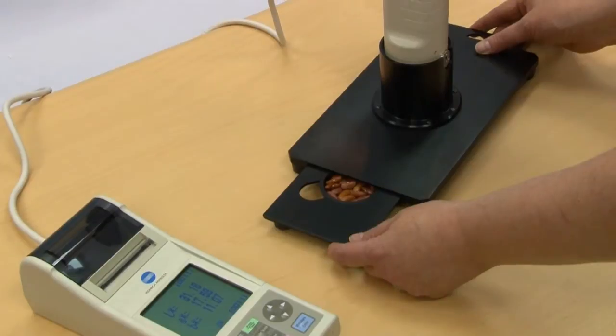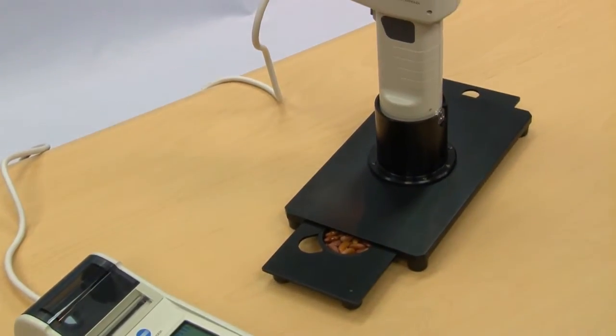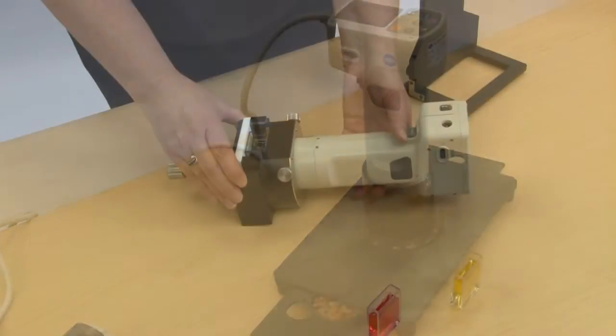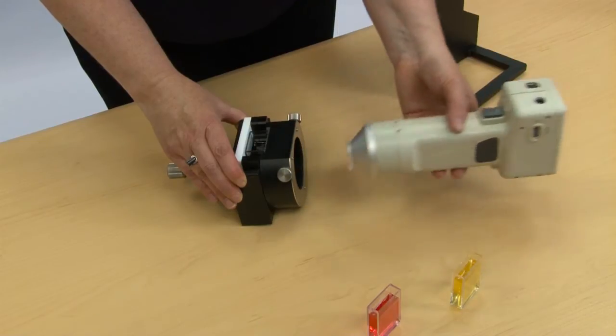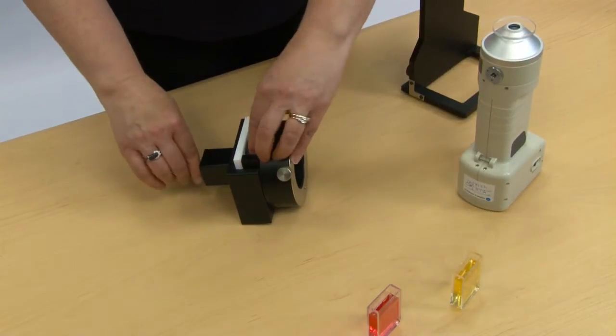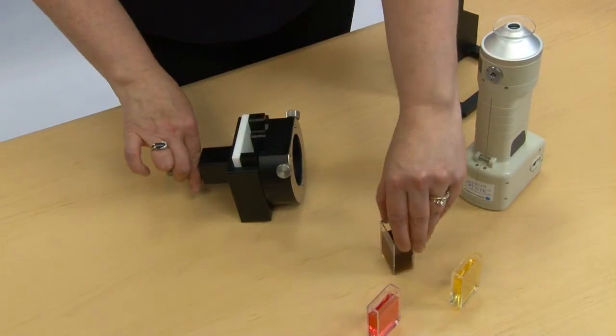Konica Minolta offers a full complement of accessories. The company's optional accessories are capable of handling a variety of samples, including powder, paste, granulars, and opaque liquids.